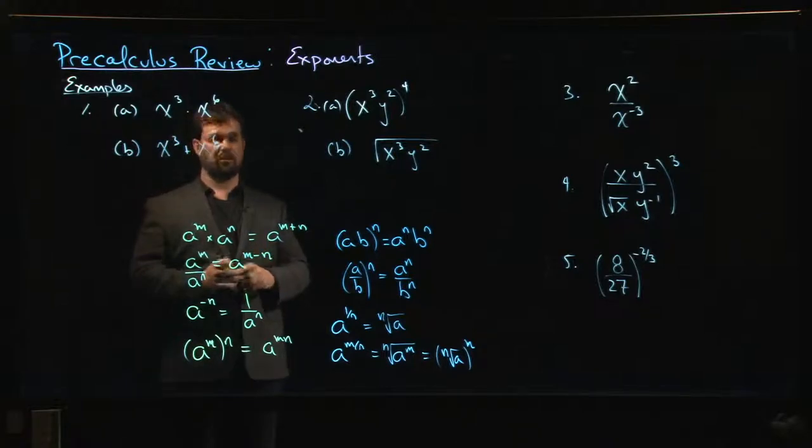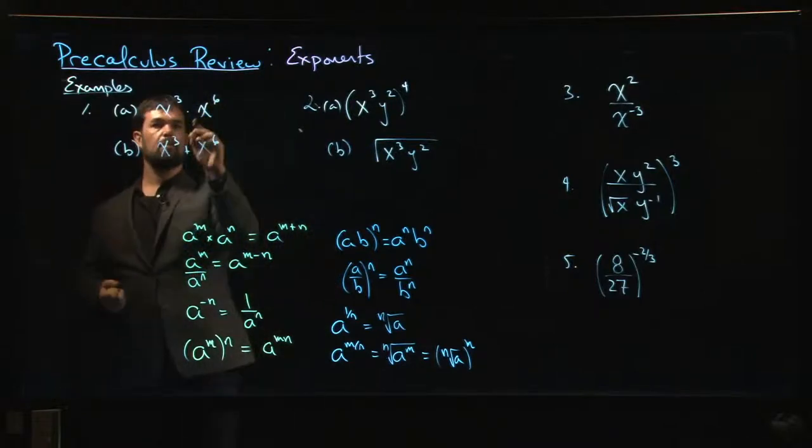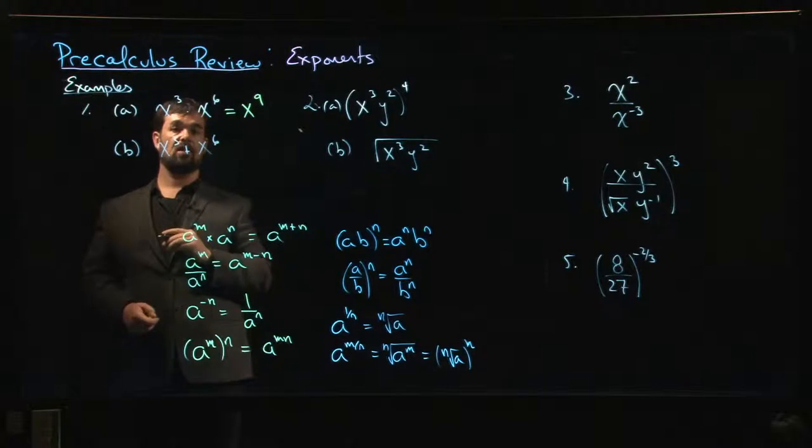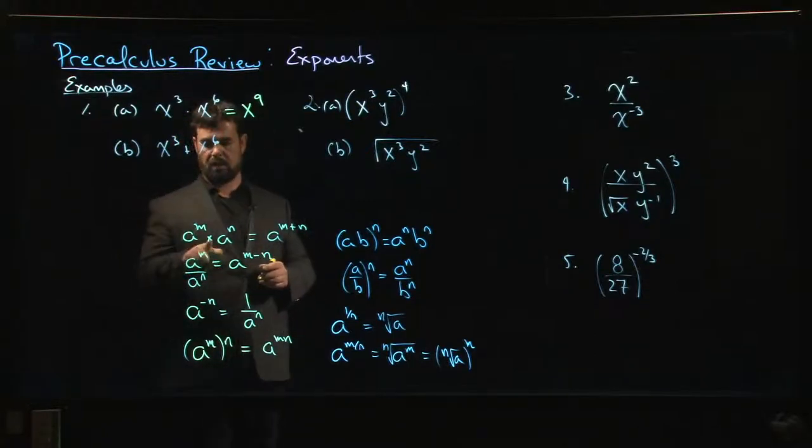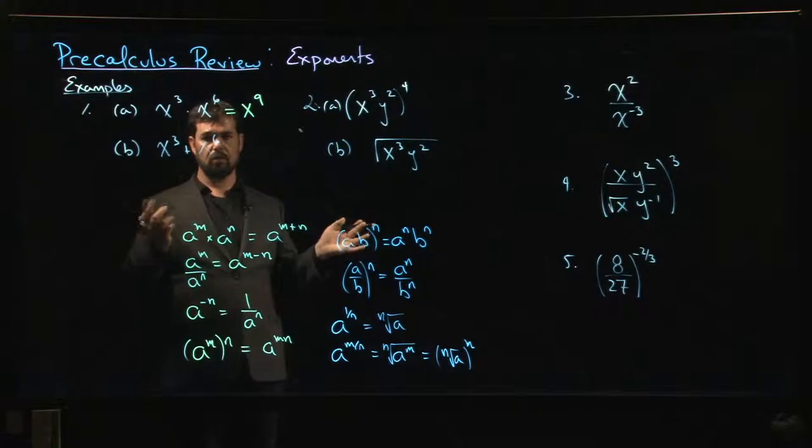Let's have a look. First one: x³ times x⁶. Well, that's a straightforward application of this first rule. We're multiplying two powers with the same base, so we simply add the exponents. 3 plus 6 is 9, so that's x⁹. Now I've thrown the other one in because people tend to get mixed up on these. When do I use that rule?